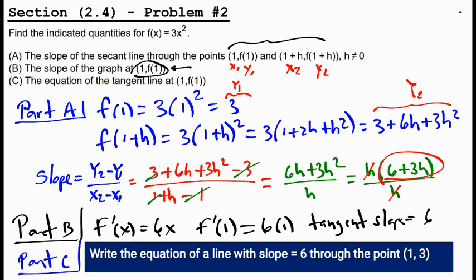So part C, we're going to write the equation of a line with slope equal to 6 through the point (1, 3). Because we already evaluated what f(x) was at 1. We did that in part A and we saw we got 3. So we have a point and a slope.